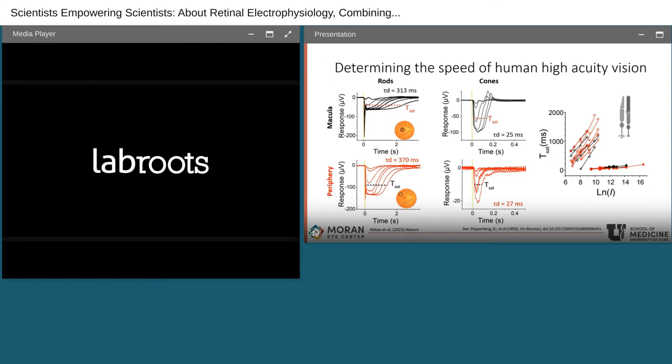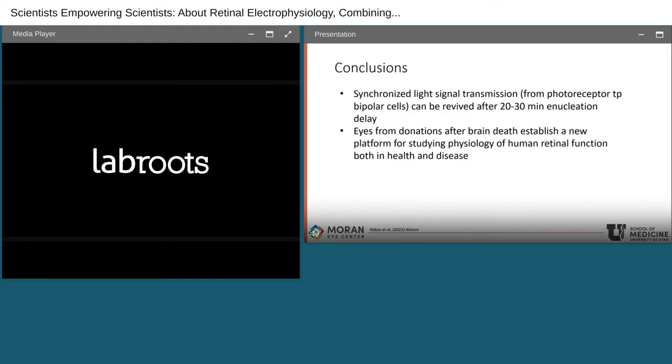We can see that the examples on the left are rods in macular and periphery. Using a double flash stimulus, we can do the same to obtain the values for cones in macular and periphery. Using these obtained TSAT values, we can then plot them against the log of the light stimulus given to determine this deactivation rate. What we can see from the values here is that the rods in macular and periphery don't have a significant difference in these rates. Similarly, cones in macular and periphery are not that different. While we used healthy retina for these studies, in the future, we expect to find differences in similar aspects of photoreceptor physiology that may occur in diseased retina. That's what this donor eye preparation will really allow us to quantify and understand further.